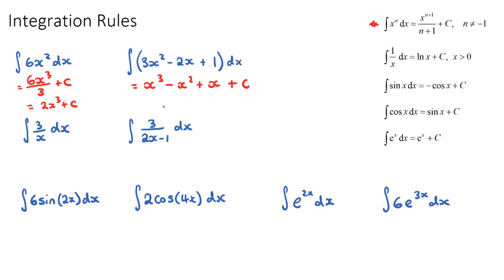If we have x on the denominator, we use this rule: the integral of 1 over x becomes ln x plus c, where x must be greater than 0. So if we have the integral of 3 over x, the 3 stays on the numerator — it's the same as integrating 3 times 1 over x — so it'll be 3 ln x plus c.